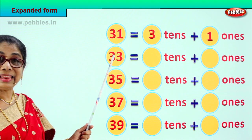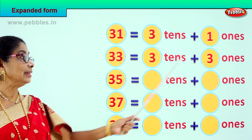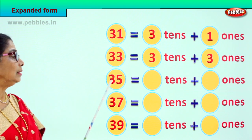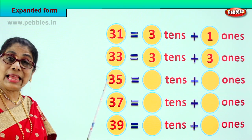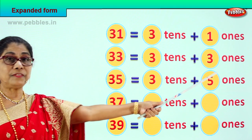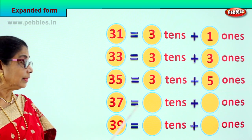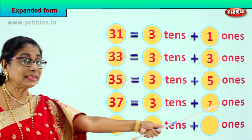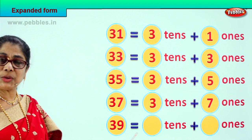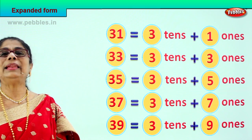33 is 3 tens and 3 ones. 3 tens plus 3 ones. And 35 is 3 tens and 5 ones. 3 tens plus 5 ones. 37 is 3 tens plus 7 ones. And 39 is equal to 3 tens plus 9 ones.